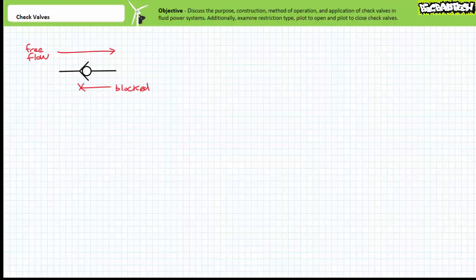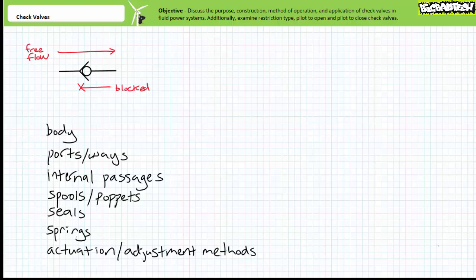Later lectures will detail the features we don't examine today when it's appropriate to do so. For now, consider this a general orientation after which we'll examine the check valve and apply these terms. First, valves have a valve body, which is a housing for the internal valve components.